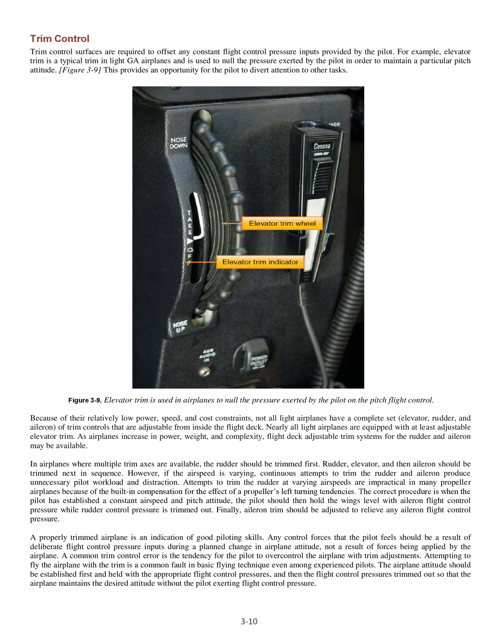As airplanes increase in power, weight, and complexity, flight deck adjustable trim systems for the rudder and aileron may be available. In airplanes where multiple trim axes are available, the rudder should be trimmed first, then elevator, and then aileron. However, if the airspeed is varying, continuous attempts to trim the rudder and aileron produce unnecessary pilot workload and distraction. Attempts to trim the rudder at varying airspeeds are impractical in many propeller airplanes because of the built-in compensation for the effect of a propeller's left-turning tendencies.